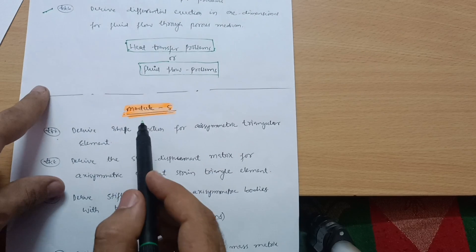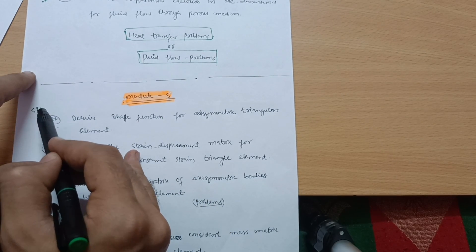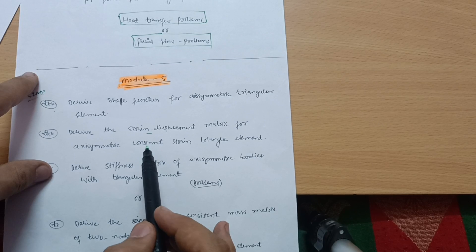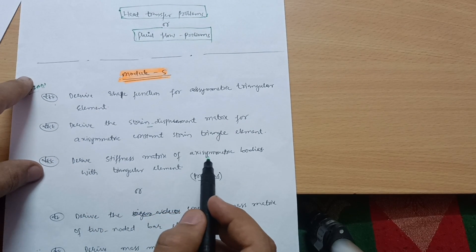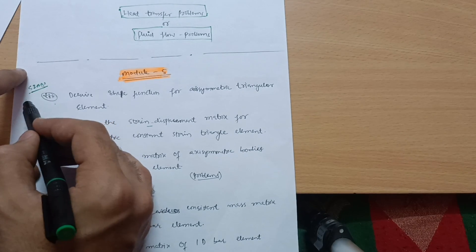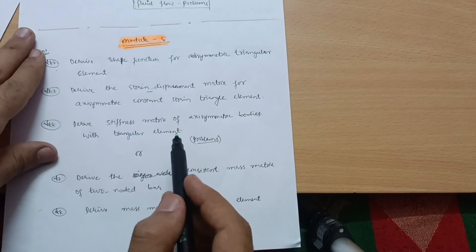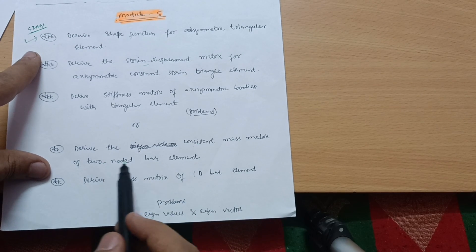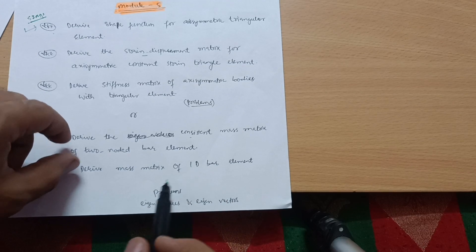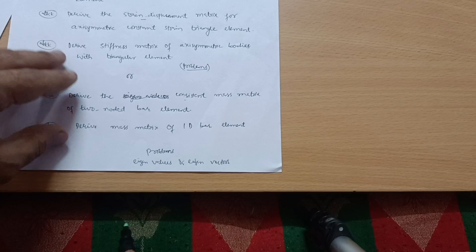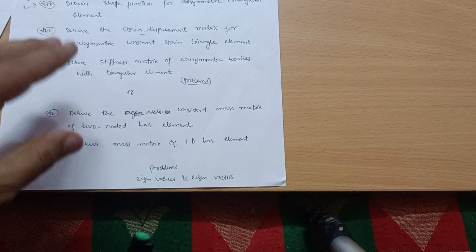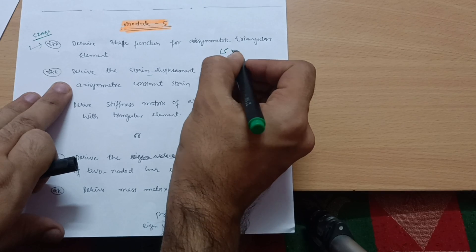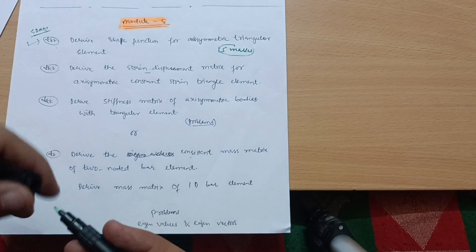Module 5 has the super important question: derive shape function for axisymmetric triangular element, or derive the strain-displacement matrix for axisymmetric constant strain triangle (CST) element. Next: derive stiffness matrix of axisymmetric bodies with triangular element — first priority should be this question. In the other part: derive the consistent mass matrix of two-noded bar element, or derive mass matrix of 1D bar element. There are also some eigenvalue and eigenvector problems, which are a bit more difficult.